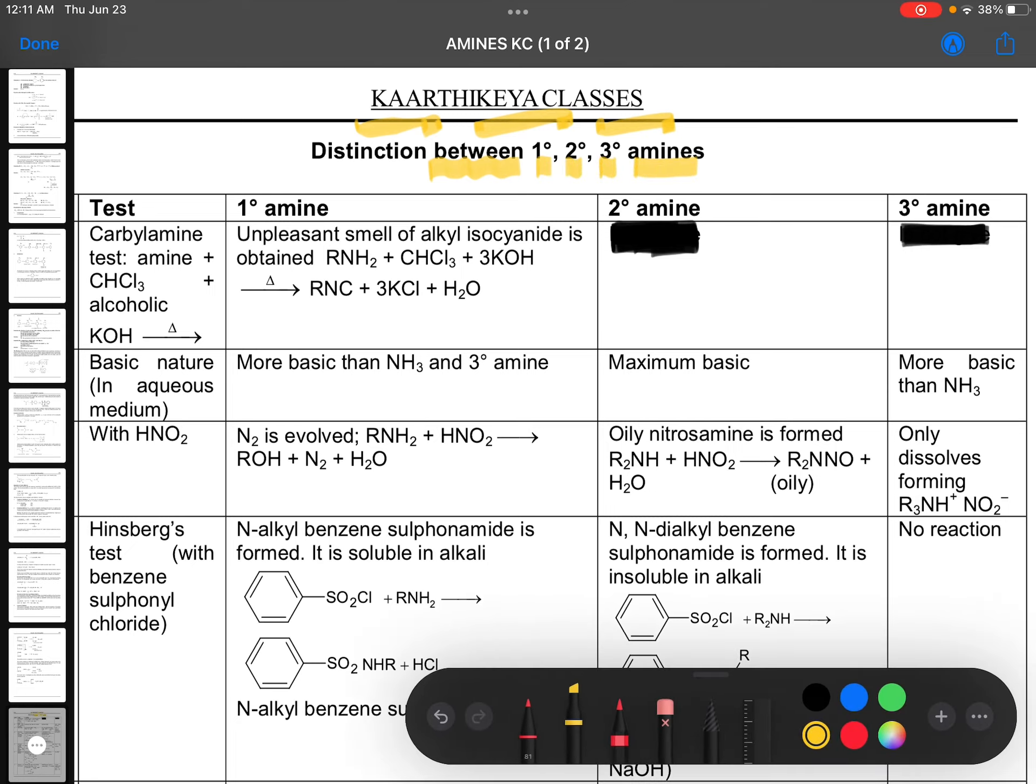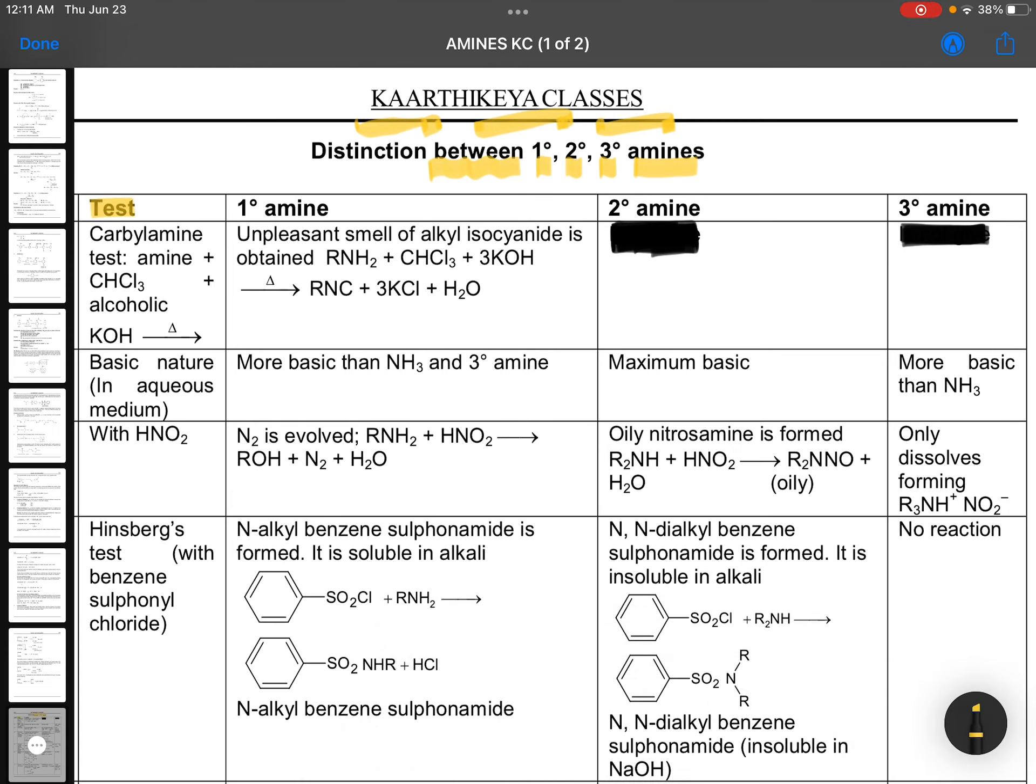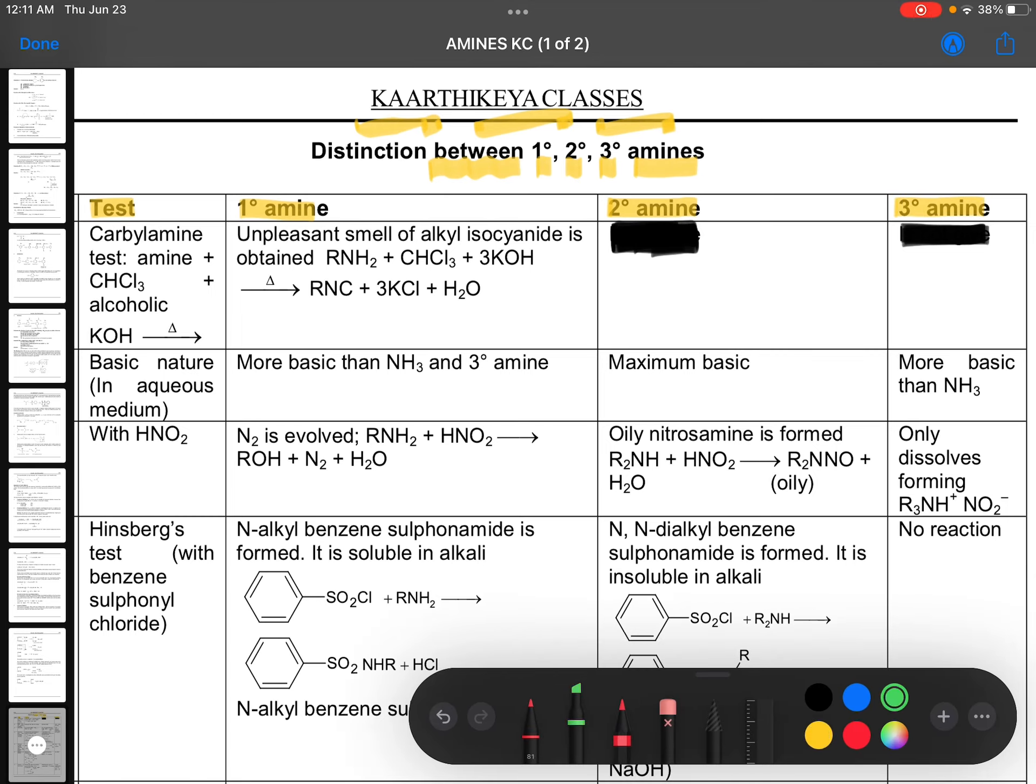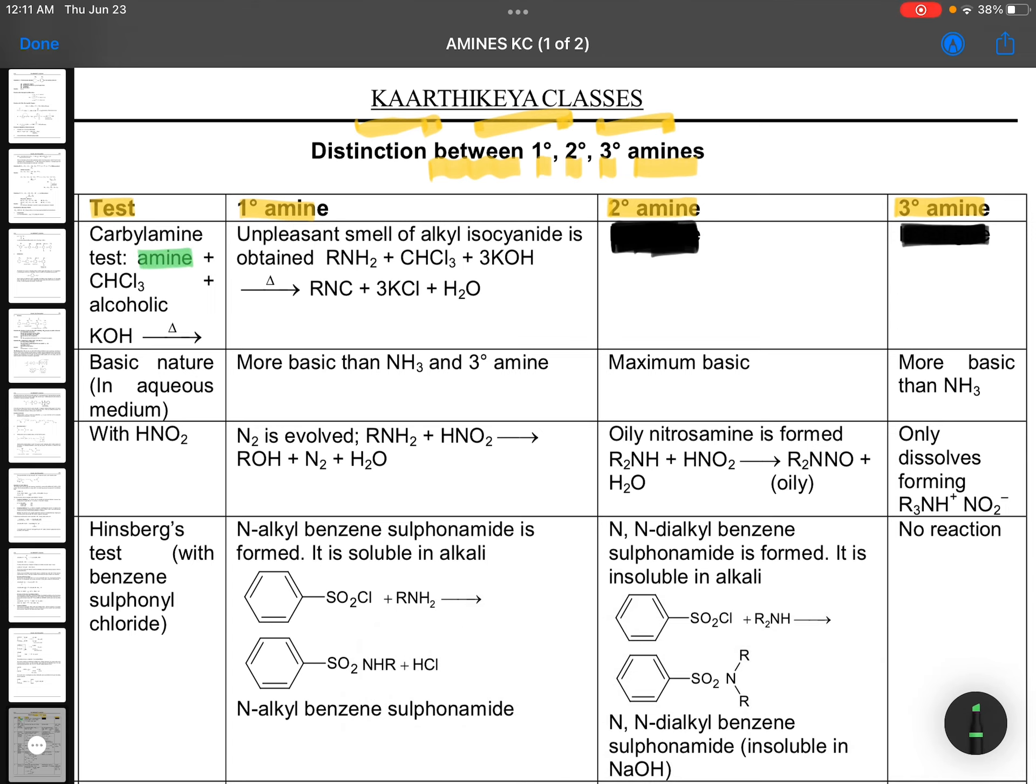Very, very special reactions these are. First, we are taking a test: what happens with primary amine, what happens with secondary amine, and what will be with tertiary amine. Simple. First test is carbylamine reaction. Carbylamine test means amine is taken, chloroform is added along with alcoholic KOH. With this, if isocyanide is formed, that is primary amine. Exclusive, only primary amine.